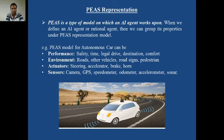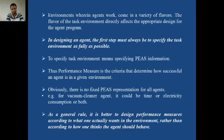The PEAS parameters you find for the car are not the same for other agents — for example, for a vacuum cleaner agent the PEAS parameters could be different. Whenever we want to design an intelligent or rational agent, we have to completely specify the PEAS parameters. The flavor of the task environment directly affects the appropriate design of the agent program — the type of environment decides what program we should write for our agent.